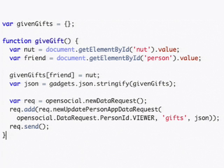We do that by creating a new DataRequest object and passing into it a new UpdatePersonAppData request, specifying to save the data under the Viewer object. Then we send the request to the OpenSocial API, which stores the data.